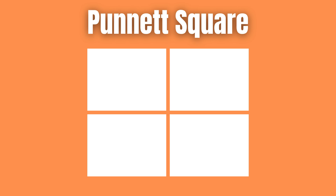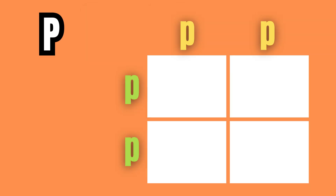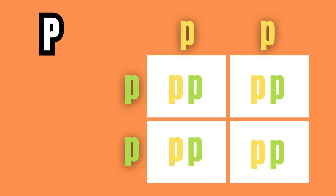To understand what is going on under the hood, let's draw and fill in the Punnett square for these two generations. As you can see, when crossing the two pure breeds, the resulting offspring are all heterozygotes, or carriers of the recessive green allele.